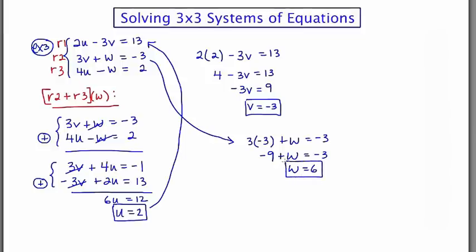Again, it's customary to write your answer as an ordered triple in alphabetical order. So we've got u, v, w, or 2, negative 3, 6. So let's put a box around that. And there's your answer. This is the solution that will satisfy the original 3 by 3 system of equations.